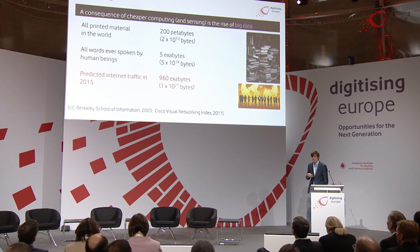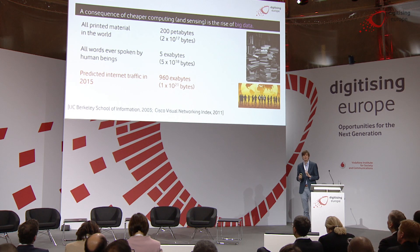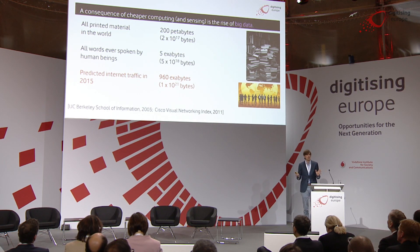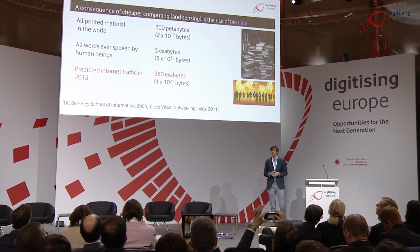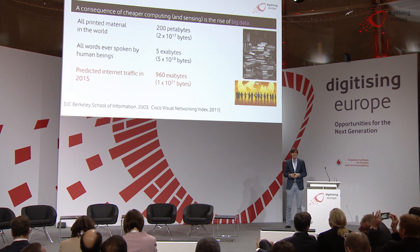An associated fact drawn from the incredible decline in the cost of computing is that we have much more data available now than we've ever had. An estimate of the information contained in all printed material in the world today is about 200 petabytes. An estimate of all the words ever spoken by human beings is about five exabytes. But both figures are completely dwarfed by the predicted internet traffic just next year, which is expected to approach one zettabyte. With this completely unprecedented quantity of information at our disposal, we might be able to do more with an algorithm than ever before.